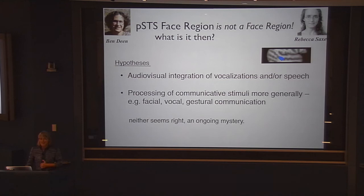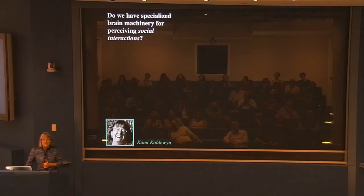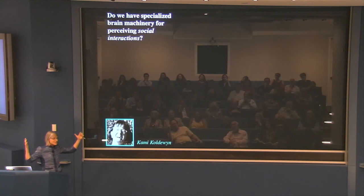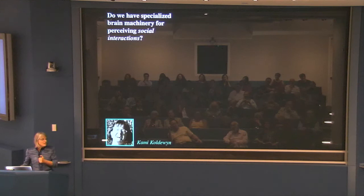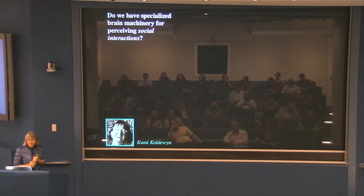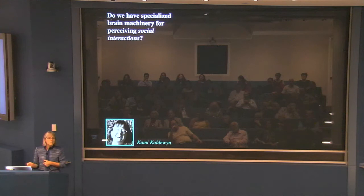This region is implicated in autism. Instead of pursuing that still-unresolved question further, I'm going to change the topic and tell you about a nearby region — right next door to this one, sometimes slightly overlapping — that does something we have a little more of a handle on. This is work by Kami Koldewein, who asks whether we have specialized machinery in the brain for perceiving social interactions between two people.